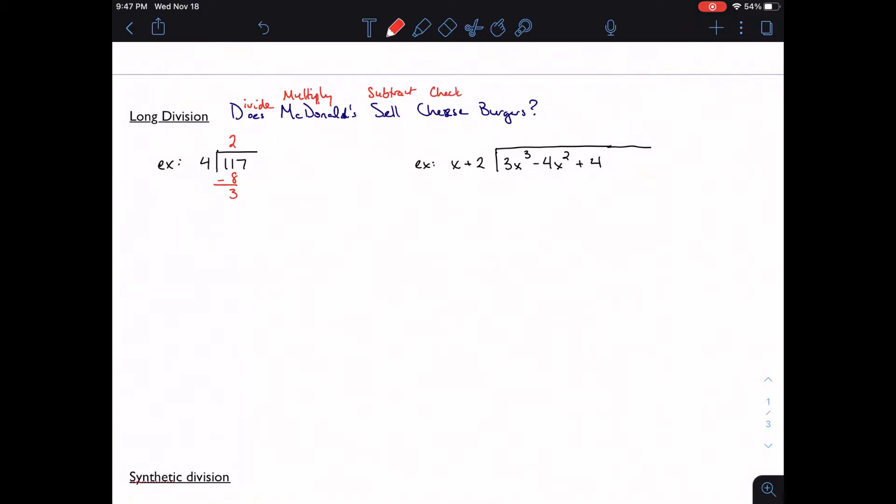I would check, do I have anything else to work with, yes I do. Then I would bring down the next number and repeat the process. So I have 34, 9, 36, 1. I have nothing else to work with, and I would say 29 remainder 1.